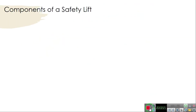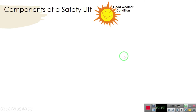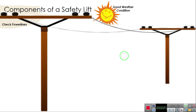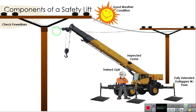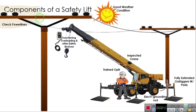The components of a safe lift: first, check good weather conditions; second, check power lines; third, position the inspected crane; fourth, operated by a trained operator; fifth, fully extended outriggers with outrigger pads; sixth, electrical grounding rod must be installed; seventh, functioning overload and other safety devices such as the anemometer; eighth, inspected lifting gears.